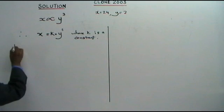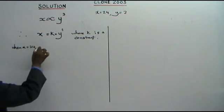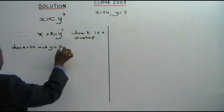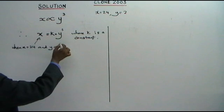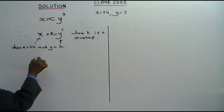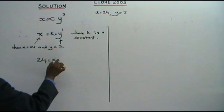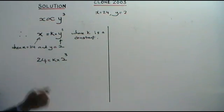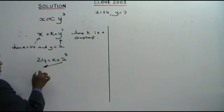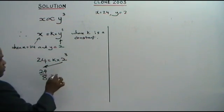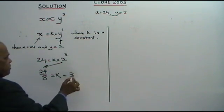When X equals 24 and Y equals 2, we substitute the values here. Therefore, 24 is equal to K times 2 cubed. What is 2 cubed? It's 8. So 24 over 8 equals K.